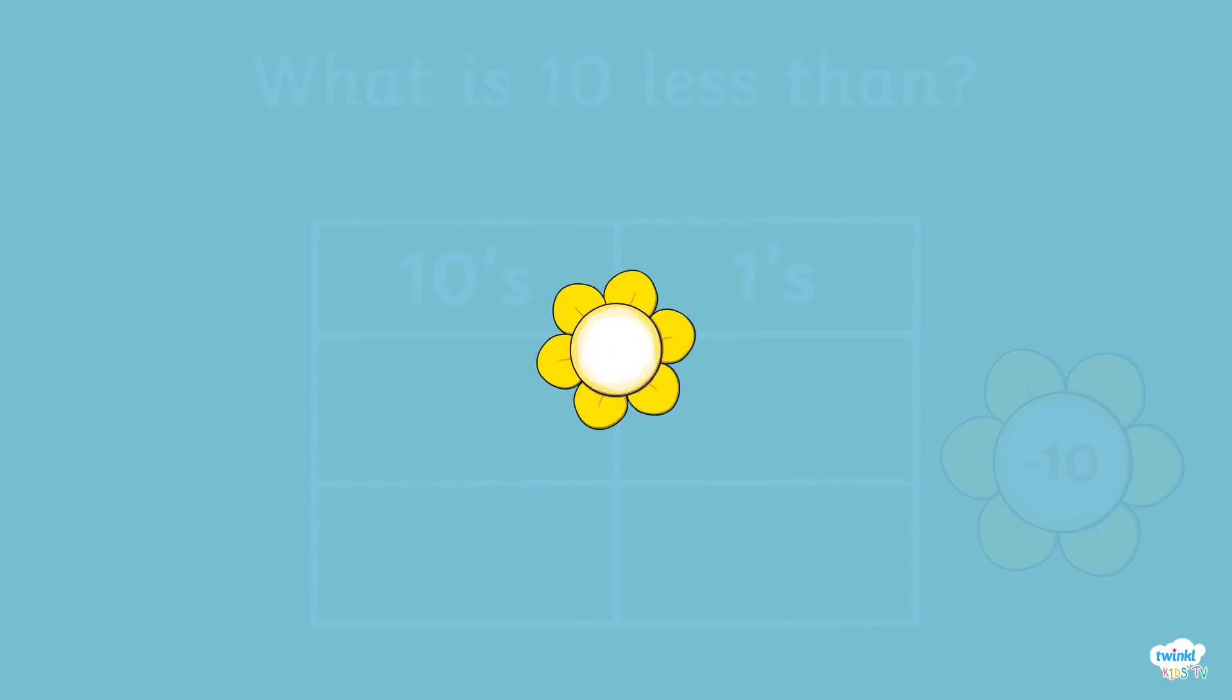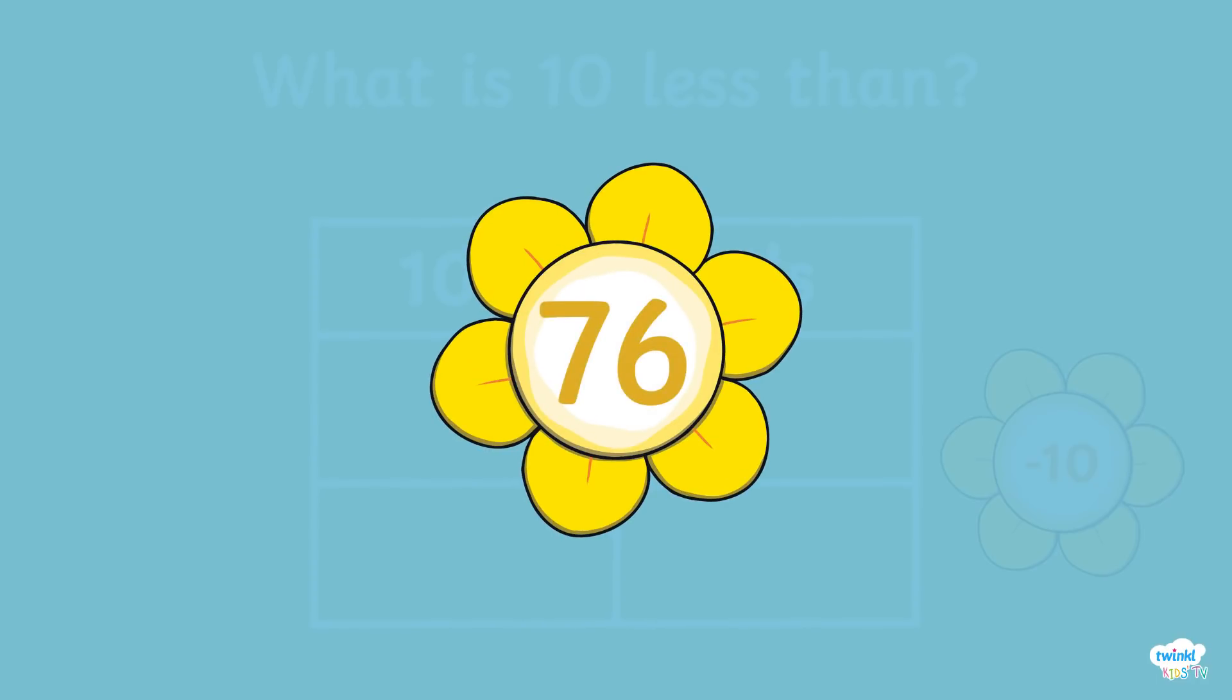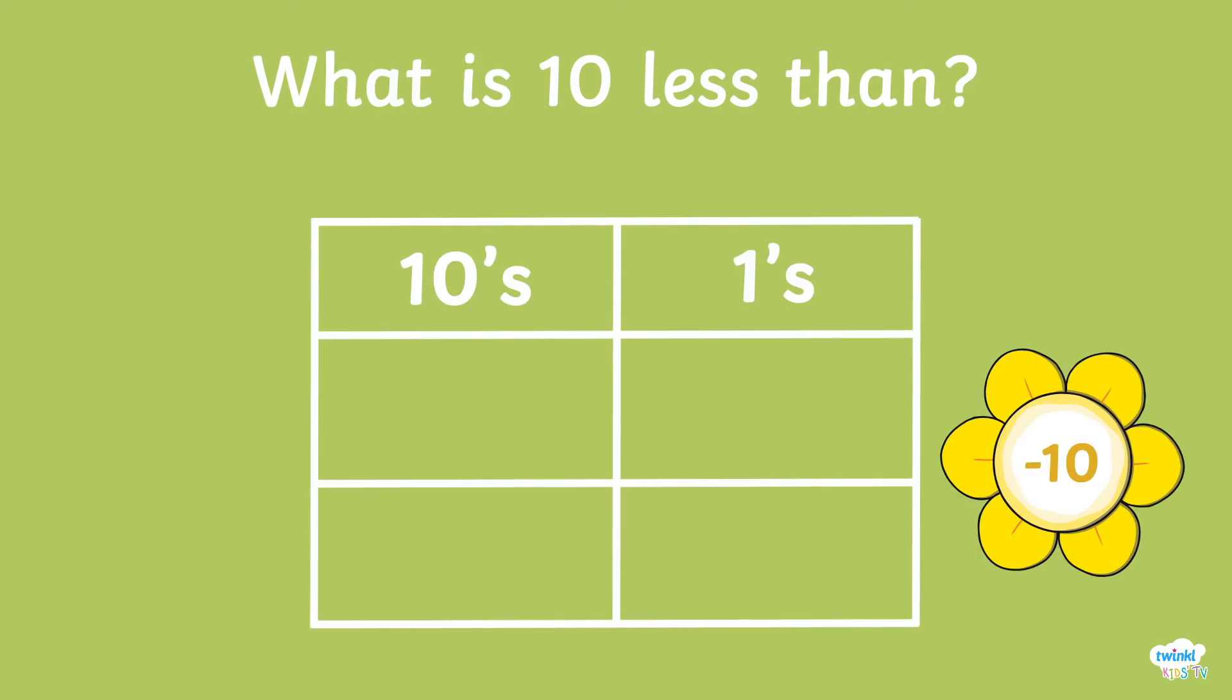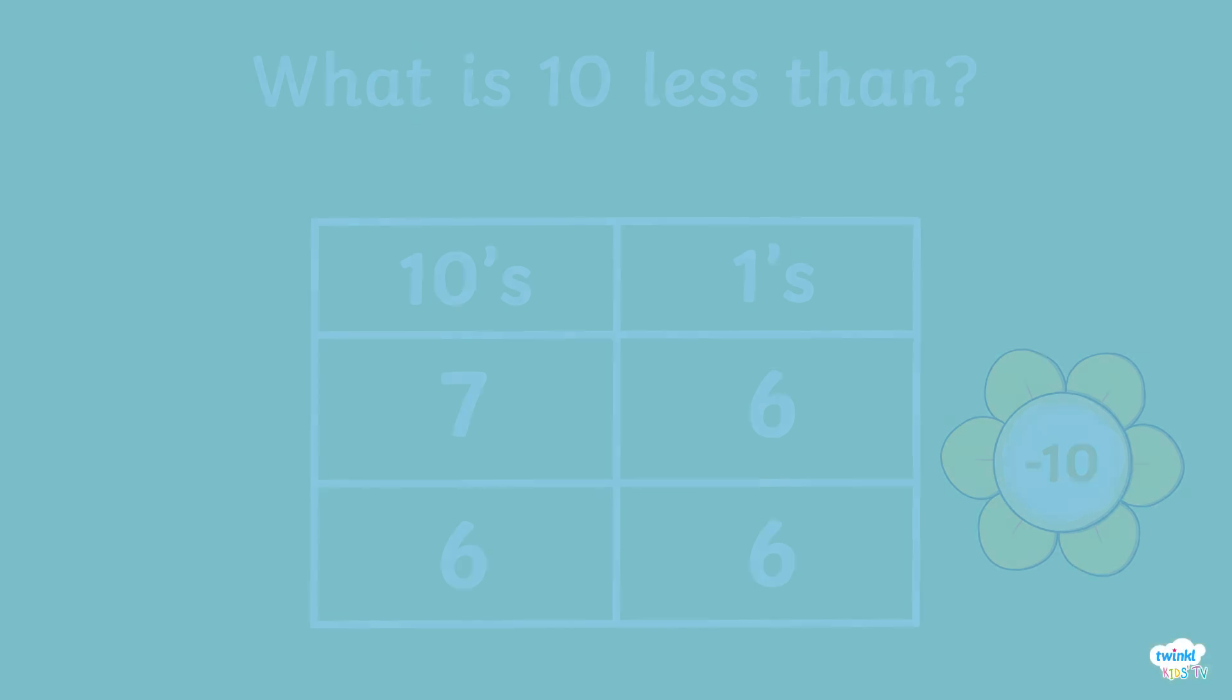Last one! We're nearly there! Our last number is 76. Place our 7 tens into the tens column and our 6 ones into the ones column. Let's take away 10 from this number. Bish bash bosh! You've worked out that 10 less than 76 is 66!